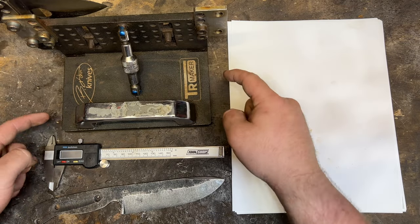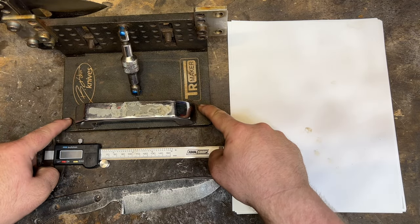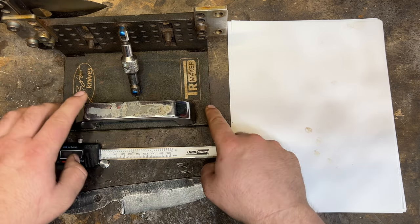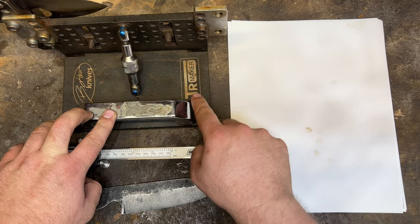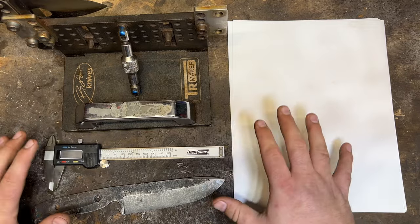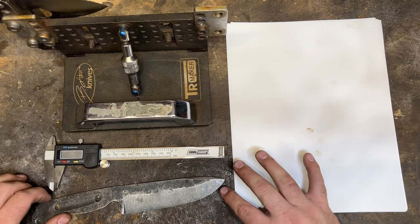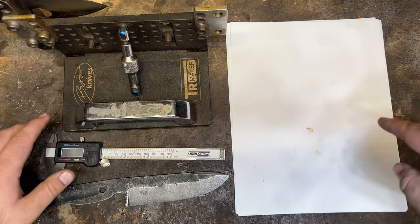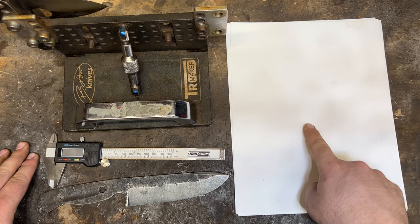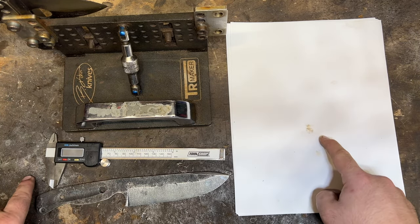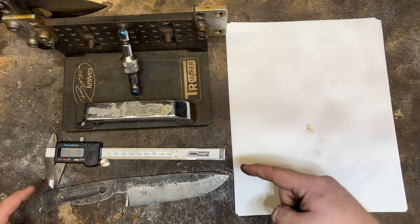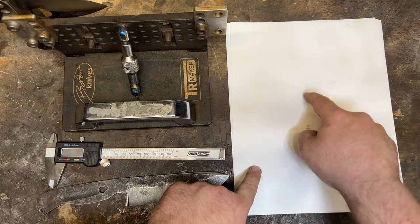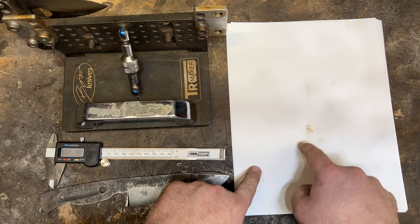Ever since I released the video showing off the TRMaker Bevel Chicken File Guide, I've been getting questions about how I figure out exactly what my bevel degree is. In this video, I will show you how to do that. It does involve some trigonometry, and I know that sounds scary, but there's an app to do all of the math for you, so you won't actually have to do it yourself. Let's jump into the ideas behind what you're doing so that you can understand what you need to do before you need to do it.